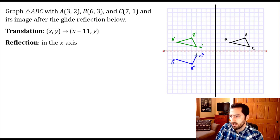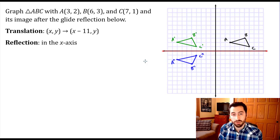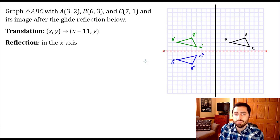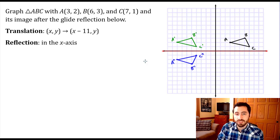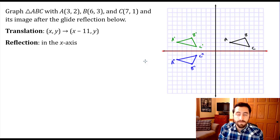Connecting these together, we get our final image after the glide reflection. The notation is important: the original triangle is unlabeled in green, the first step after translation uses single primes — A prime, B prime, C prime — and after the reflection the final answer uses double primes — A double prime, B double prime, C double prime. This notation shows the correct order of steps. That's how you do a glide reflection: translation followed by reflection.